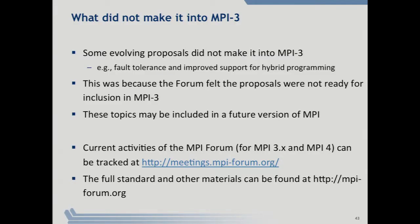MPI 3.1 is expected probably by this December, with smaller fixes and errata-type bug fixes to MPI3. MPI4 will happen sometime later. You can follow all this publicly at meetings.mpiforum — there are working groups with wikis, mailing lists you can join, and MPI Forum meetings that are open to everybody. You can also download the MPI standard itself at that website.